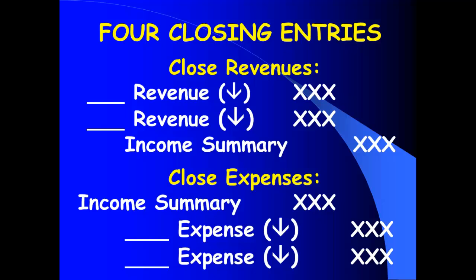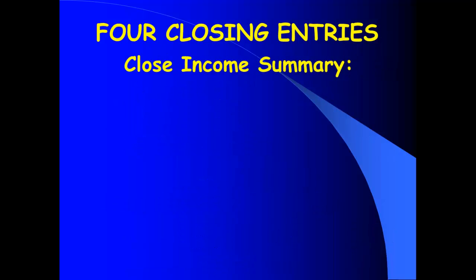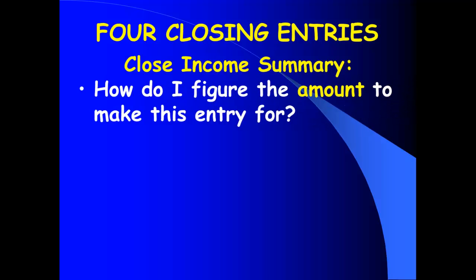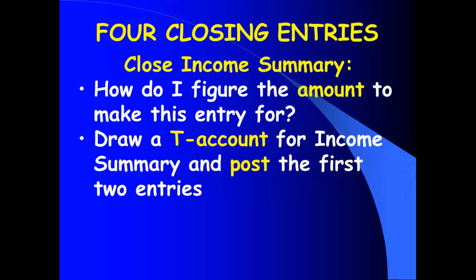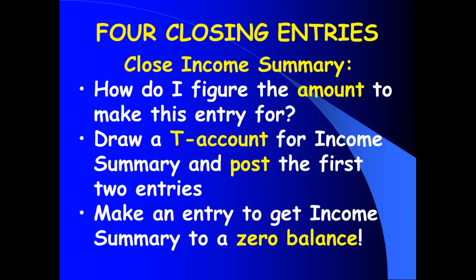My third closing entry is to close Income Summary. Before you can make that third closing entry, you need to figure out what you have in that account right now. In class we're going to stop and draw a T-account and post the first two entries to see what the balance is in Income Summary — in the real world you post them to the general ledger. Then we're going to make a journal entry to get its balance down to zero. If I have a debit balance in Income Summary, I close it out with a credit; if I have a credit balance, I close it out with a debit.